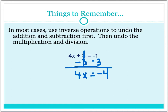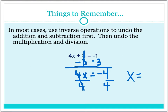Addition and subtraction are all taken care of, so now we undo the multiplication and division. In this case, we're seeing multiplication. To undo multiplication, we use division, so we're going to divide both sides by 4. This becomes 1, or we can write it as just x. x is equal to negative 4 divided by 4, which is negative 1. That is the solution to the equation we started with.